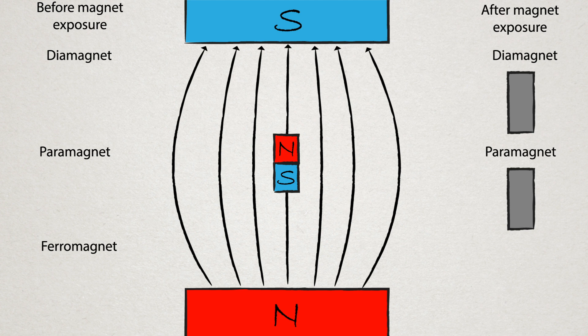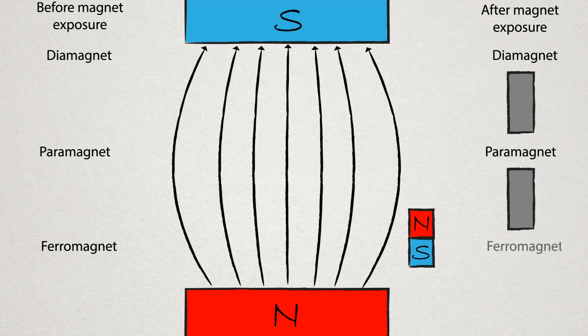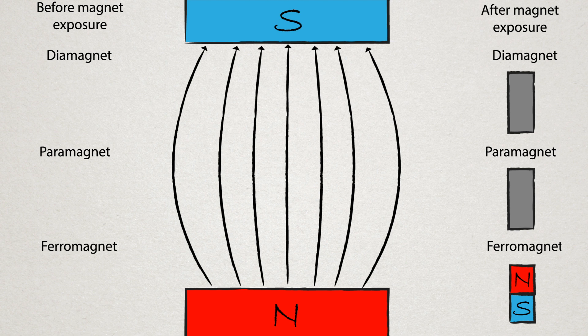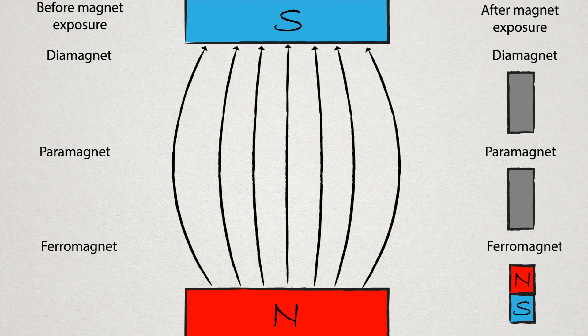However, when they're removed, they maintain this magnetization, becoming a permanent magnet. This is because the paramagnetic atoms in the material act together to reinforce the magnetization, forming these domains of spins that are orientated in the same direction.